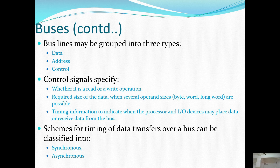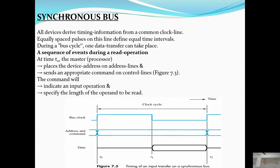Schemes for timing data transfers over a bus can be classified into synchronous and asynchronous. In a synchronous bus, all devices derive timing information from a common clock line. Equally spaced pulses on this line define equal time intervals, and during one bus cycle one data transfer can take place.